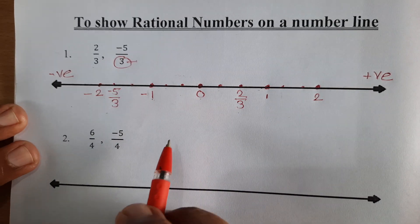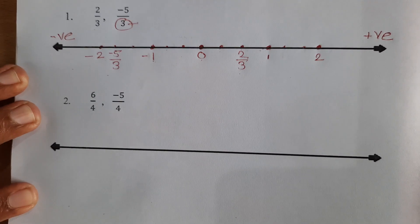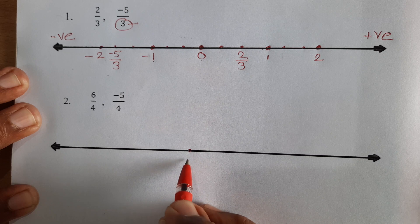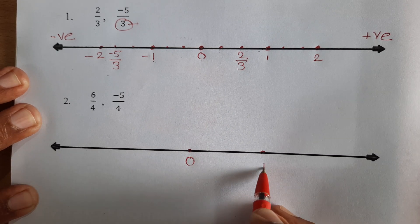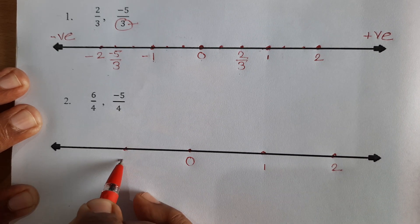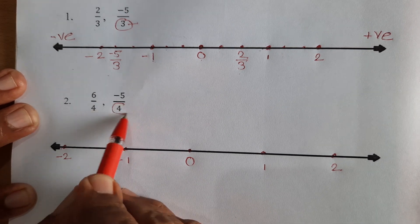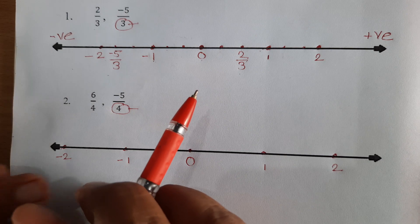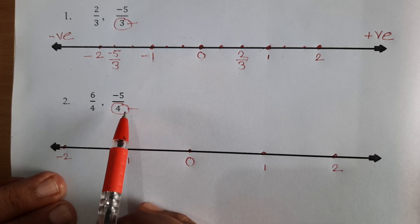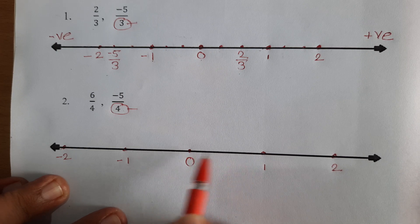Now we see another example: 6 upon 4 and negative 5 upon 4. First, draw a line then write integers: 0, 1, 2, negative 1 and negative 2. Now, here the denominator is 4. So we divide this unit distance into 4 equal parts.